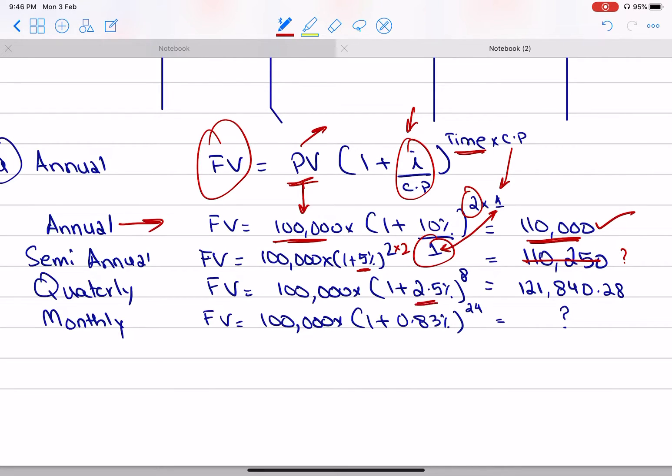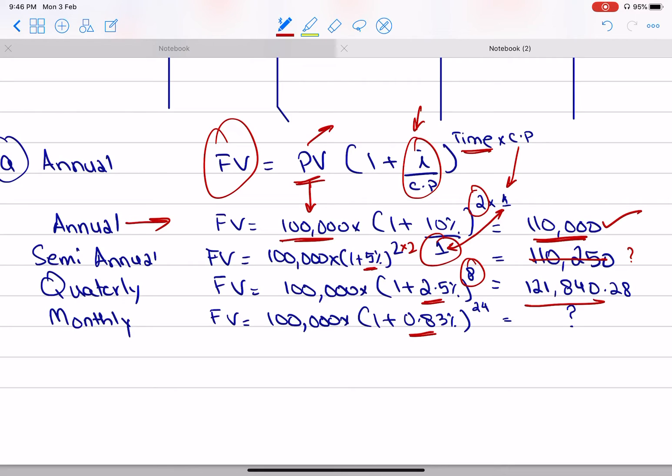What will happen quarterly? 2.5% every quarter for the next 8 quarters. There are 4 quarters in a year, so in 2 years there are 8. In the same way, for monthly, I'm going to get a return of 0.83% every month for 24 months. You can find this value.